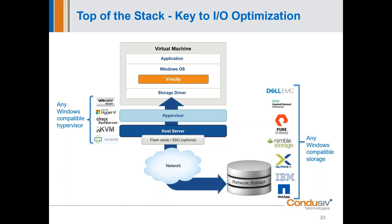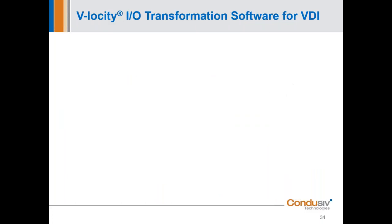The most important part of this concept is the title of the slide: Top of the Stack. We are dealing with the source versus the symptoms. This is where it becomes so important to transform the IO that Windows is issuing — from small, fractured, randomized IO to large, fewer, sequential IO. That's where you get that 30–40% throughput boost and are able to support more VDI clients on the same environment.